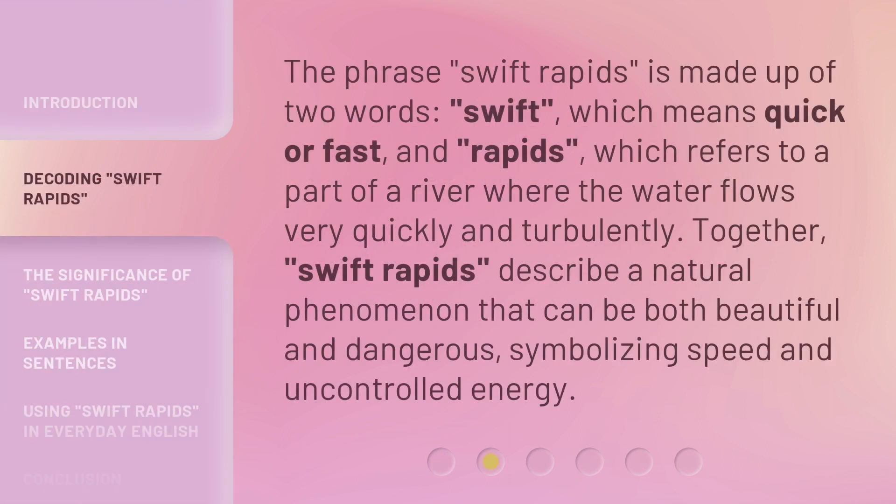The phrase Swift Rapids is made up of two words: swift, which means quick or fast, and rapids, which refers to a part of a river where the water flows very quickly and turbulently. Together, Swift Rapids describe a natural phenomenon that can be both beautiful and dangerous, symbolizing speed and uncontrolled energy.